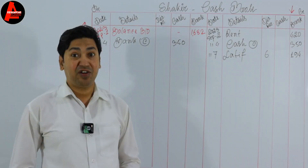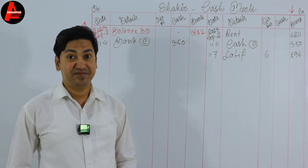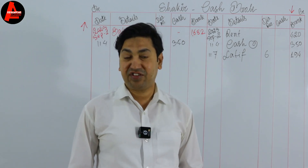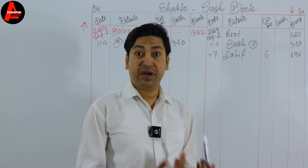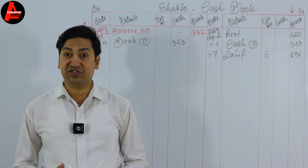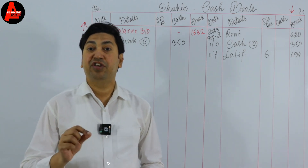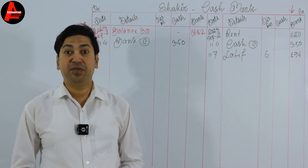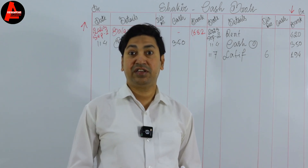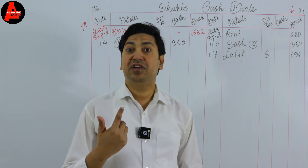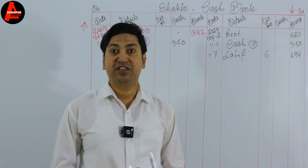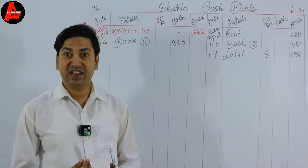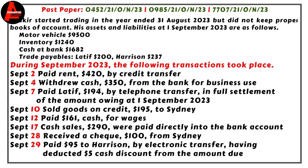September 10: sold goods on credit. Should we record this transaction in the cash book? No, not at all. We did not receive any money and we did not pay any money — it is a credit transaction. Credit-related purchases and sales are never recorded in the cash book. This transaction is given on the question just to test your understanding — if you understand, you will skip it.